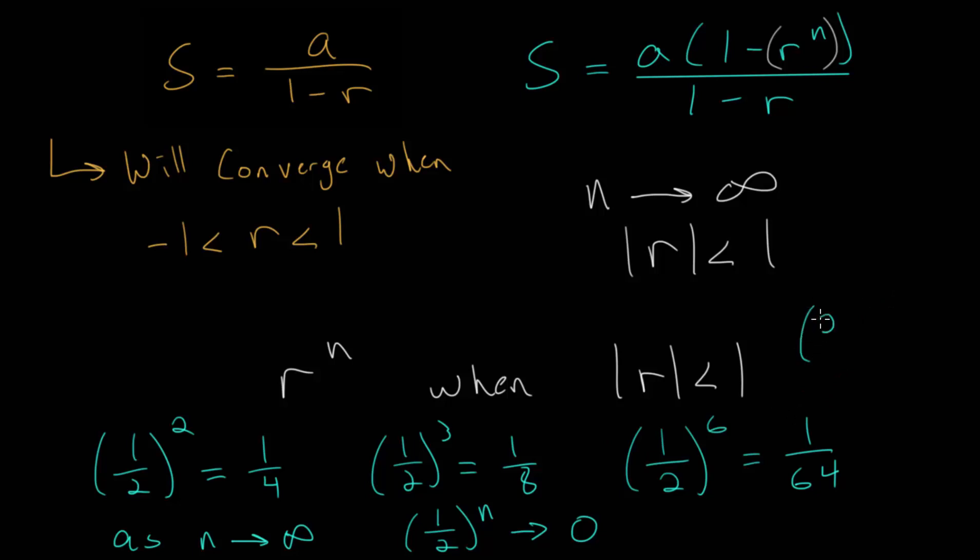It gets a little bit more complicated when maybe you look at like two-thirds as n gets bigger and bigger. But the same thing is going to happen. Since in the numerator, you have a number that's smaller than your denominator. So as you raise these, the numerator and denominator, to higher and higher powers,